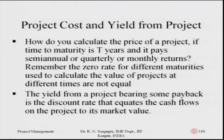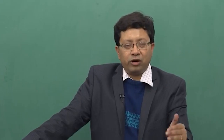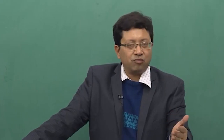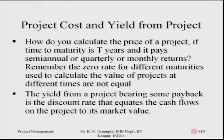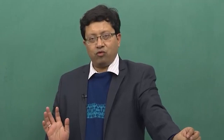We want to find out the return from the project — its yield. How do you calculate the price of a project if time to maturity is three years and it pays semi-annual, quarterly, or monthly interest? The zero rate for different maturities used to calculate project values at different times are not equal. The yield from a project is the discounted rate that equals the cash flows of the project to its market value.